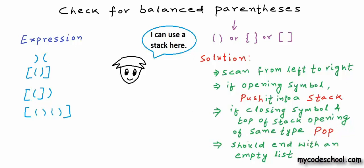So whenever we get an opening symbol while scanning, we push it onto the stack. When we get a closing symbol, we check whether the opening symbol at the top of the stack is of the same type. If it is, we pop. If it's not, we say that parenthesis are not balanced.